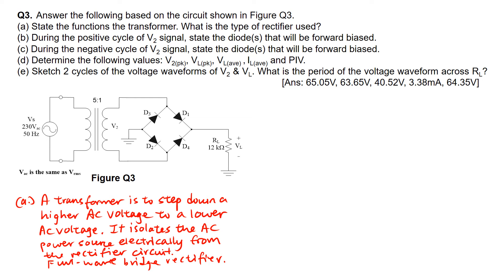Moving on to part B. During the positive half-cycle of the V2 signal — when V2 is positive — the two diodes that will be forward biased are diode D1 and diode D2. So the answer is D1 and D2.